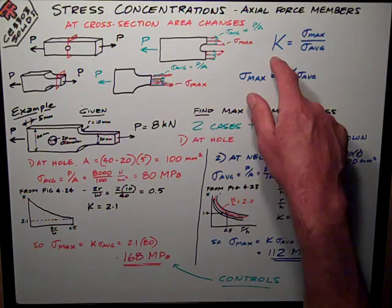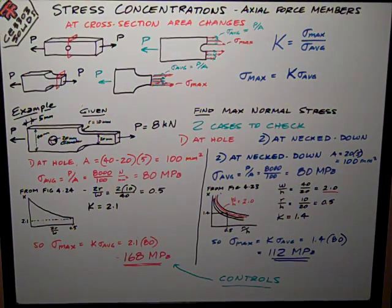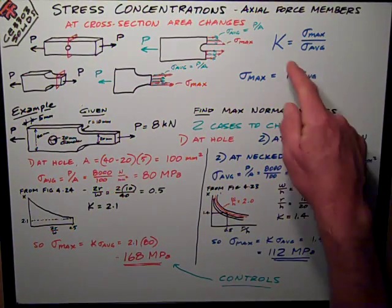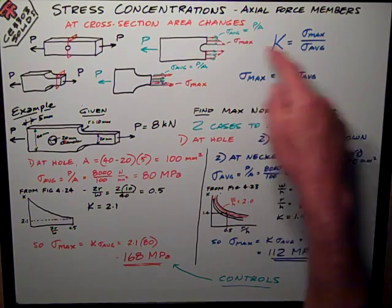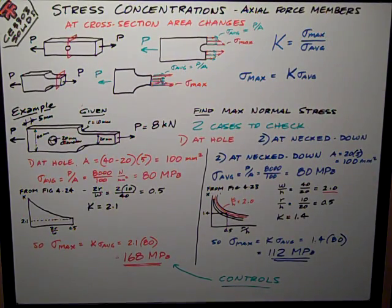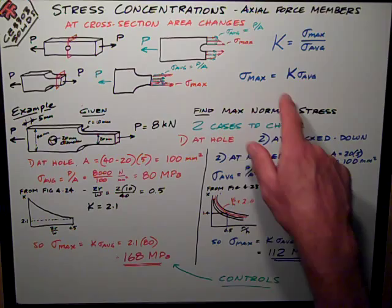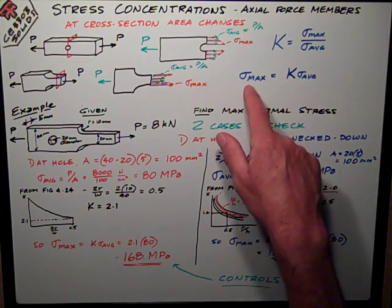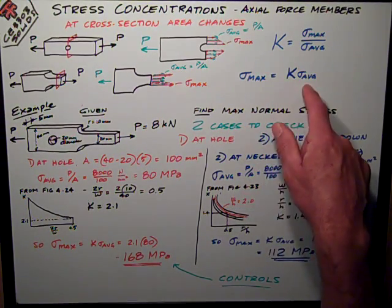So, we have this K factor, the stress concentration factor, that's just the ratio of the maximum stress to the average stress. We can rearrange that and just say the maximum stress is K times the average stress.